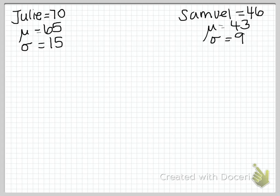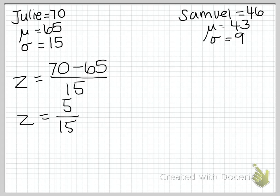So for Julie, we don't know her z, that's what we're trying to figure out. What we do know is her score, as well as her mean and her standard deviation. What this gives us is 5 over 15. If you reduce that, it's one-third or 0.333. In statistics, we work with decimals.